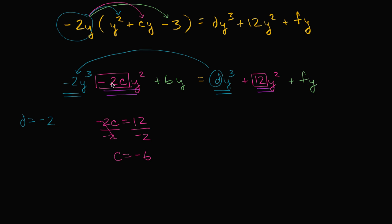If c is negative six, negative two times negative six, or negative two times negative six, is negative negative 12, which would be the same thing as adding 12. So then we get the exact same coefficient for the second degree term.